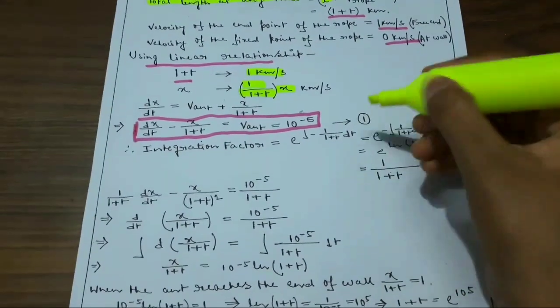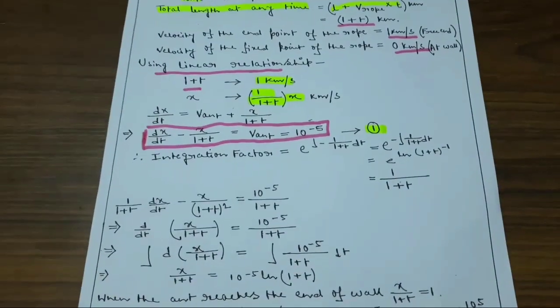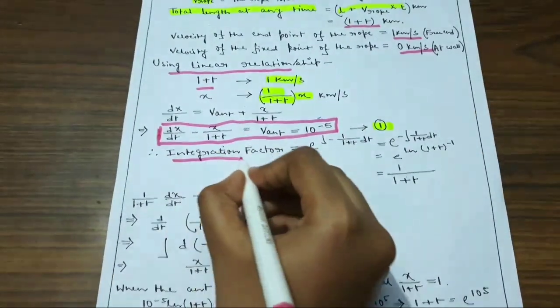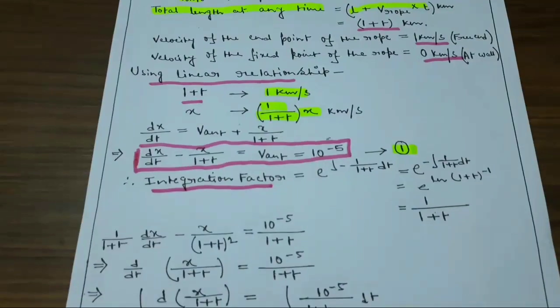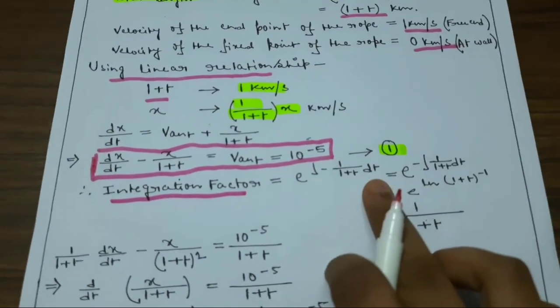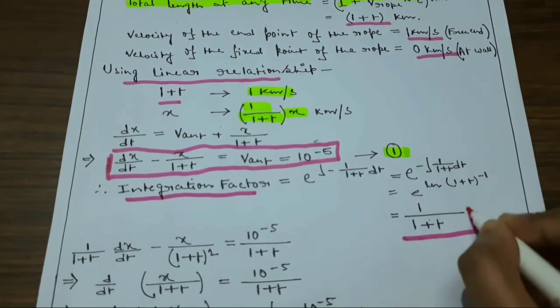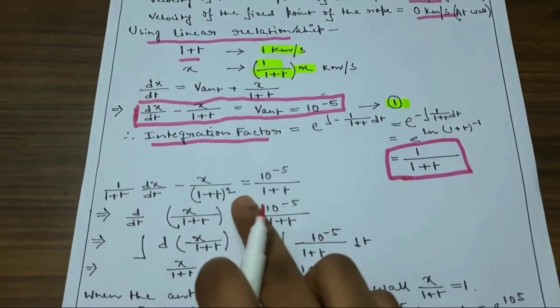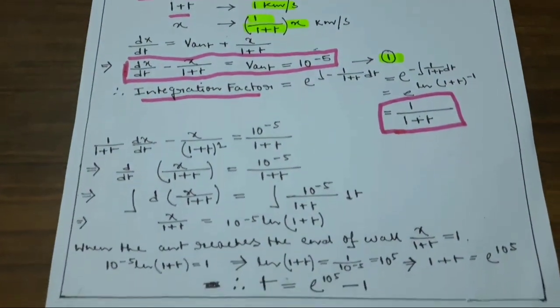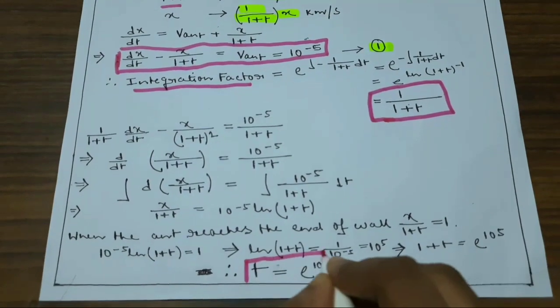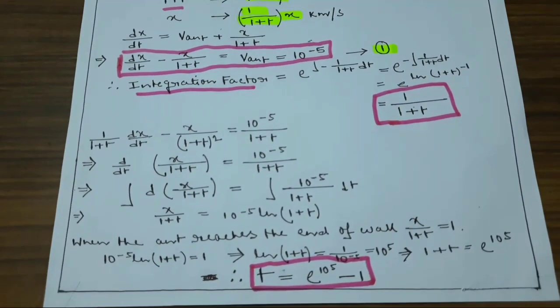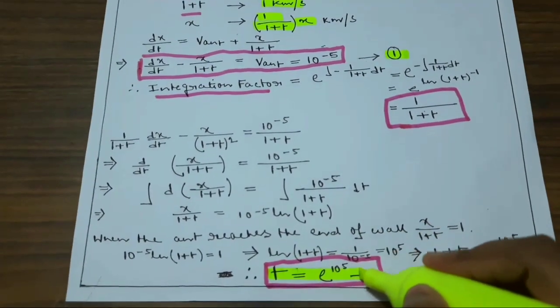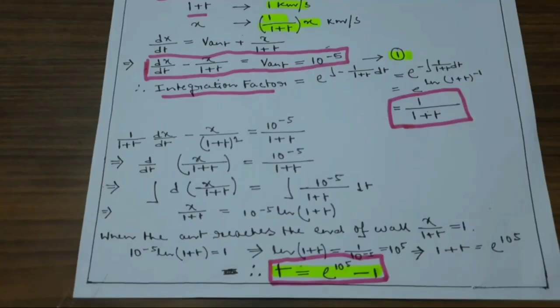This is our first-order linear differential equation. The integrating factor is e to the power of the integral of minus 1/(1+T) dt, which equals 1/(1+T). After multiplying through by the integrating factor and solving, we get the time T equals e to the power of 10^5 minus 1. So our ant will reach the end of the rope after e^(10^5) minus 1 seconds.